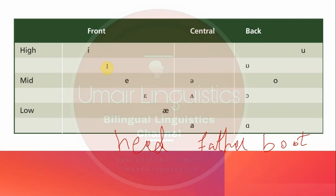One problem with the vowel quadrilateral chart is that multiple front vowels may all be described simply as 'front vowels' even though some are more forward than others, creating some ambiguity. Even so, the vowel quadrilateral is important and useful in describing vowels in terms of their articulation — it is very close to the actual reality of what the tongue is doing.